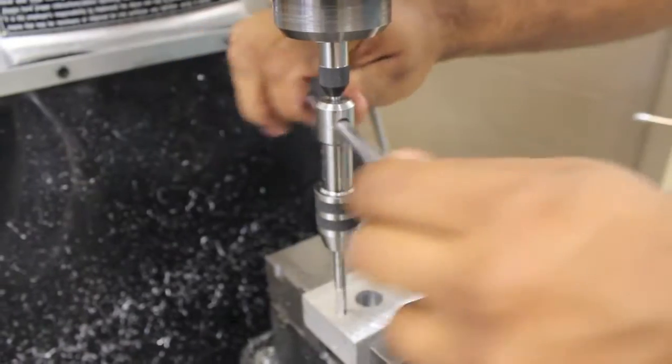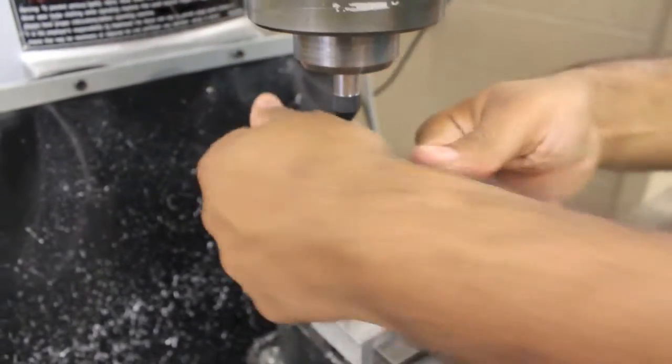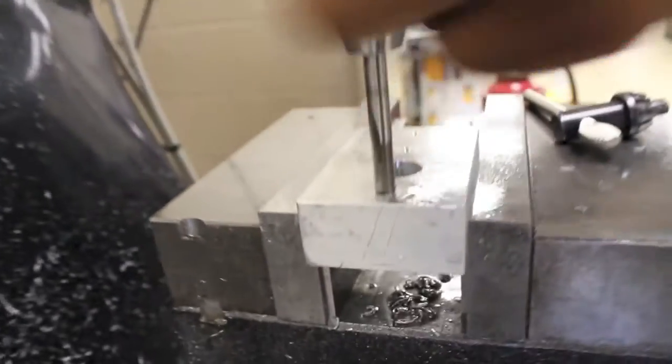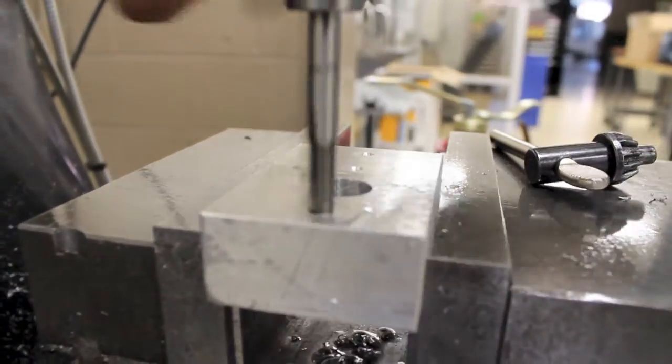After each turn, back the tap a quarter or half turn to break the chip. Continue this process until the hole is properly tapped. Use subsequent taps as needed.